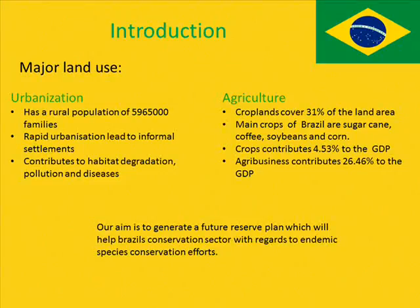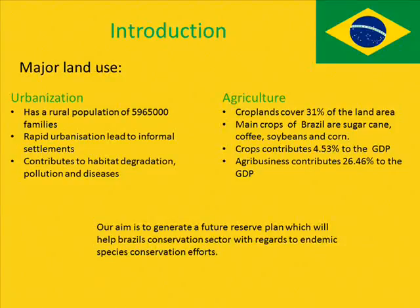Urbanization, one of the major land transformers of Brazil, has had rapid events which have led to the production of informal settlements which host a total of 5,965,000 people. Informal settlements take up land and lead to habitat degradation as well as increased pollution, contributing to unsanitary conditions which harbor diseases — a clear threat to Brazil's biodiversity.